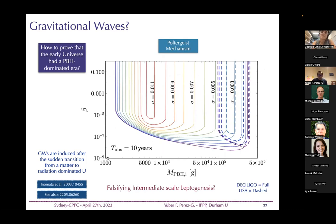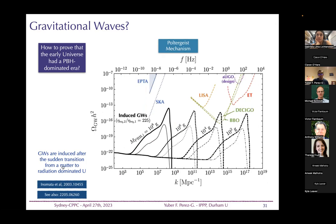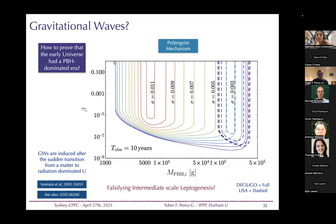The poltergeist mechanism depends on the sharpness of the matter-to-radiation transition. For a monochromatic mass distribution the transition is sudden, maximizing the gravitational wave signal. For a broader log-normal distribution the transition is slower and the signal is suppressed. This means the testable parameter space depends on the assumed mass distribution, and extended distributions reduce the signal.